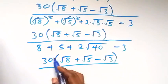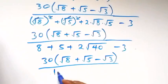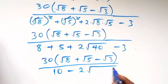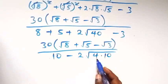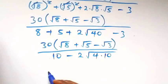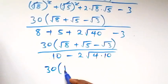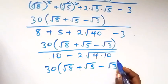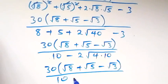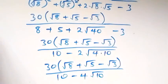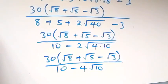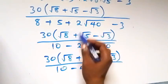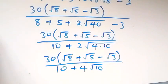Divided by 8 plus 5 minus 3, that's 10, then plus 2 root 40. We can write 40 as 4 times 10, and root 4 is 2, so that comes out multiplying to make it 4. So we have 30 into bracket root 8 plus root 5 minus root 3, divided by 10 plus 4 root 10. Please note this is a plus sign, not minus.